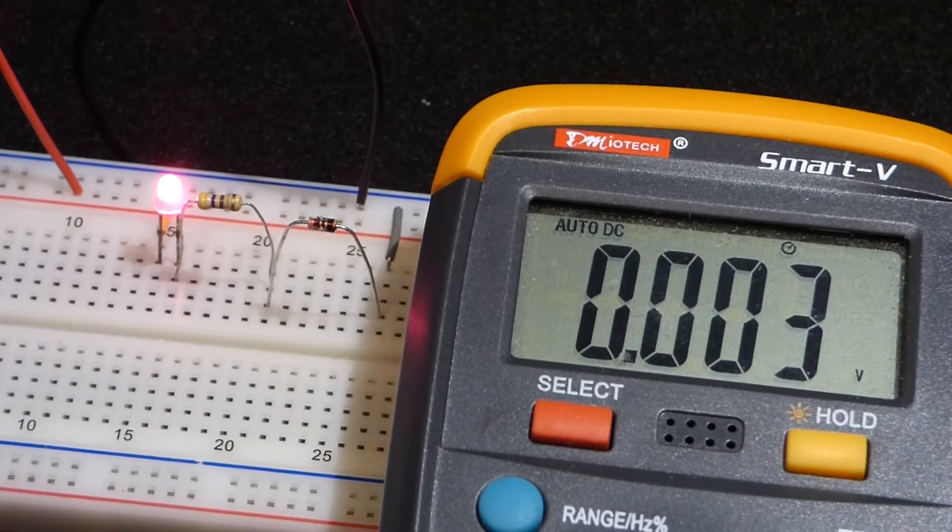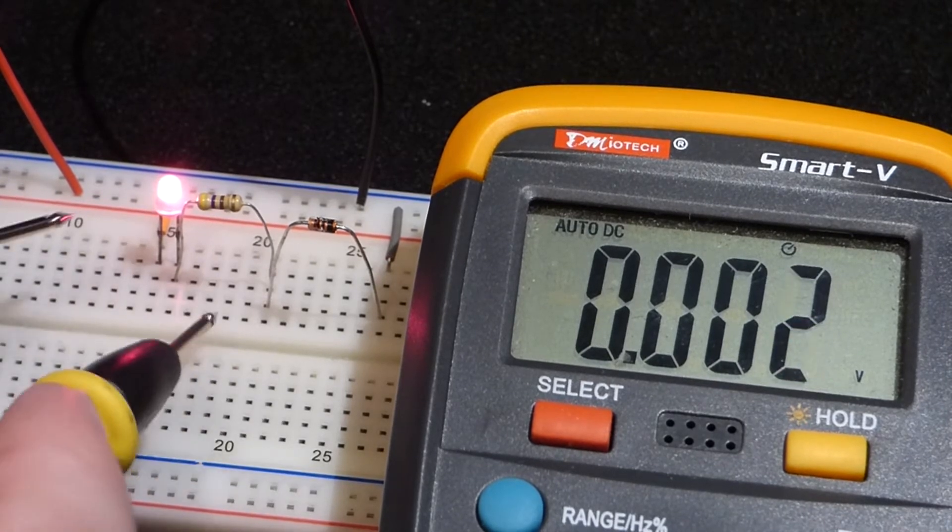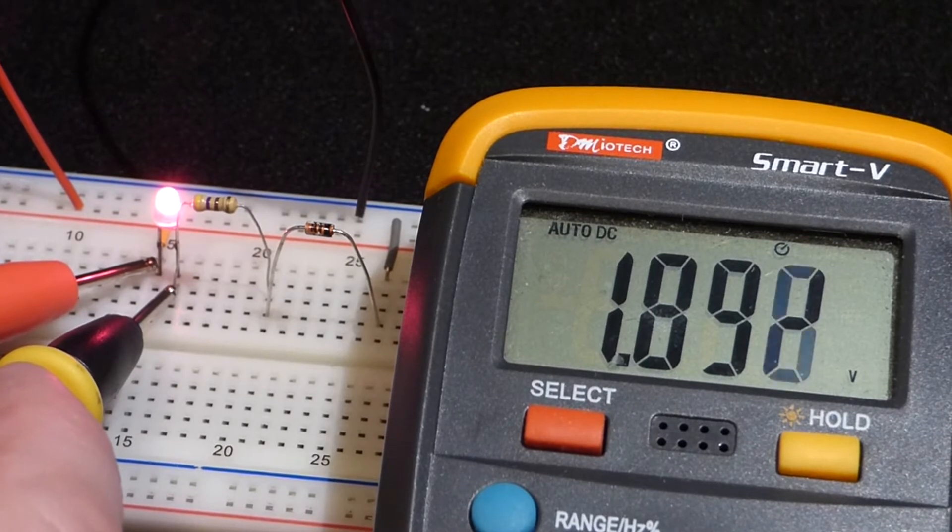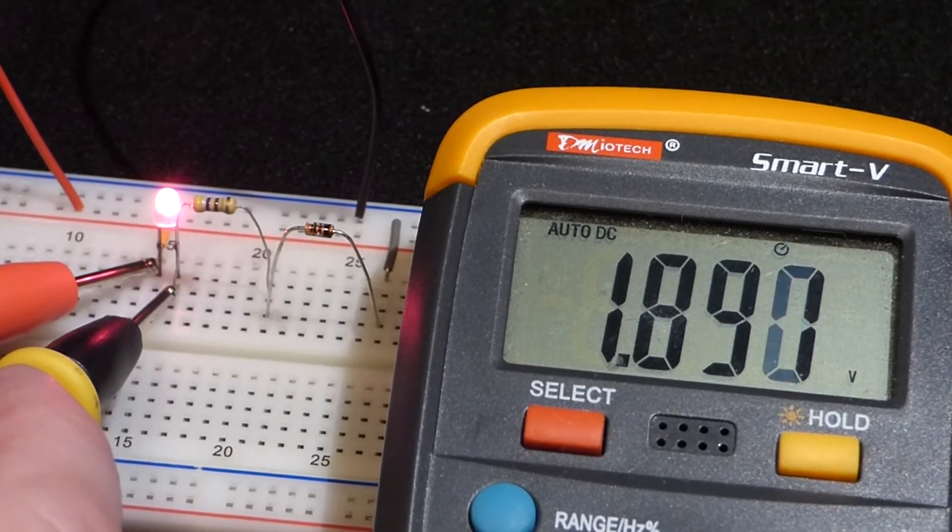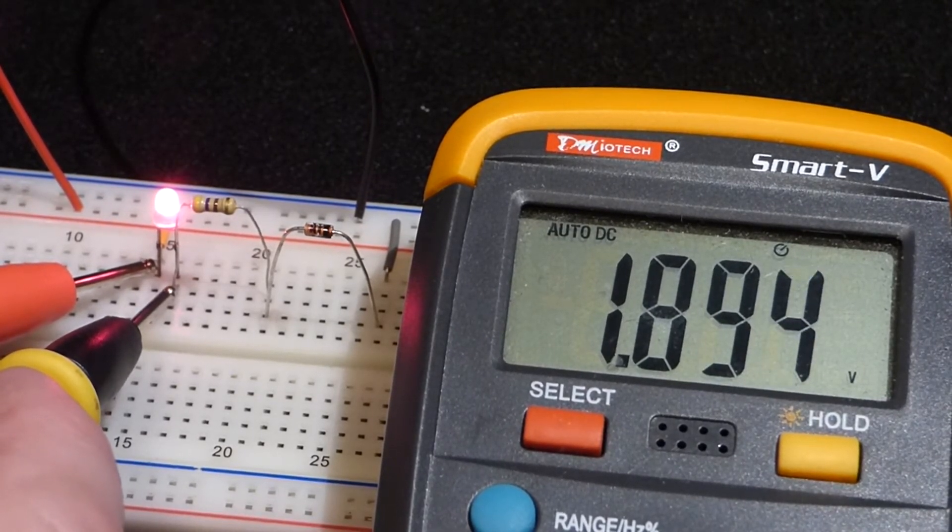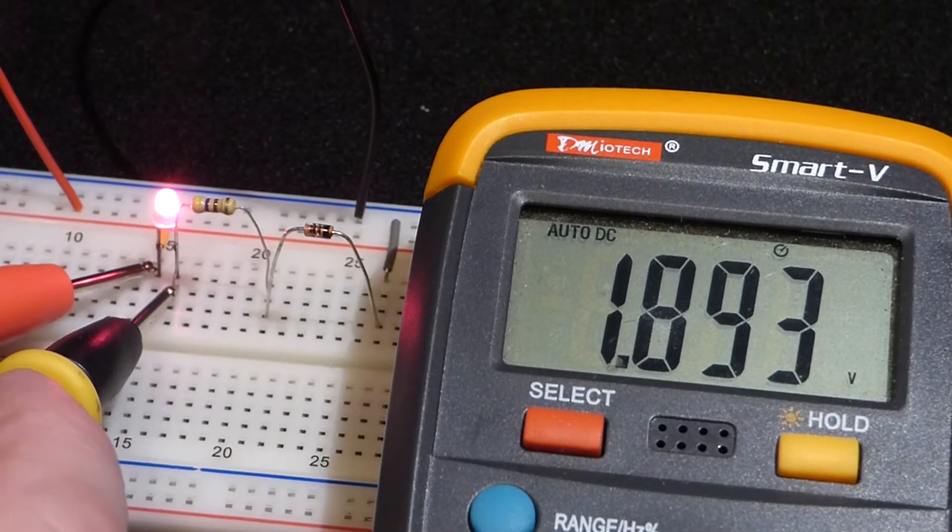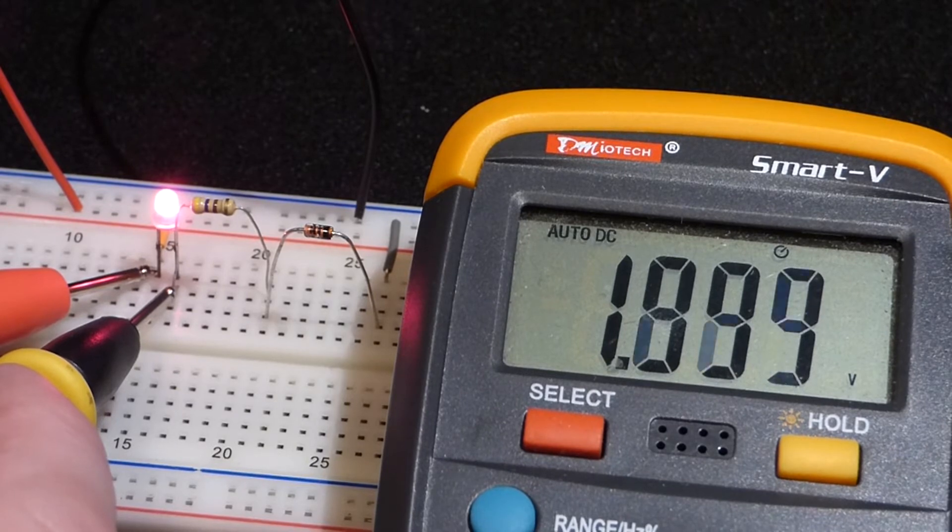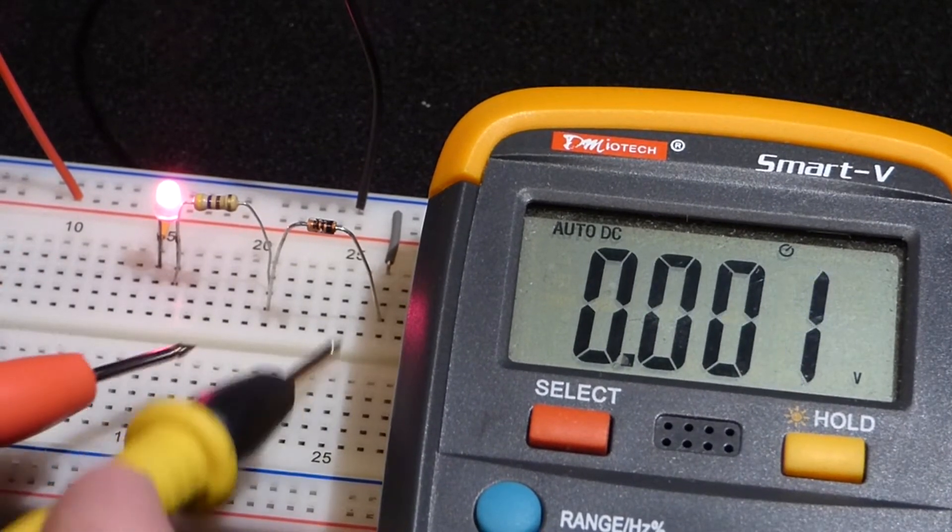You should already know by now that LEDs have about a 1.5 volt forward drop, voltage drop. And here you can see, right now, it's about 1.9 volts. So, the LED is blocking about 1.9 volts.